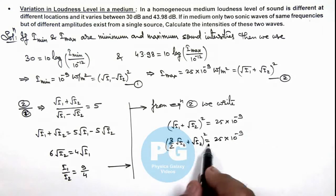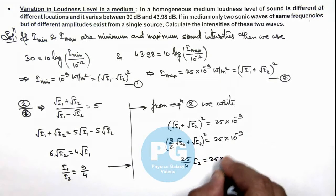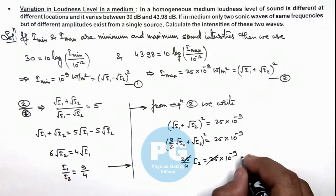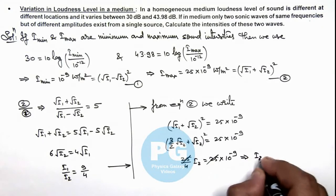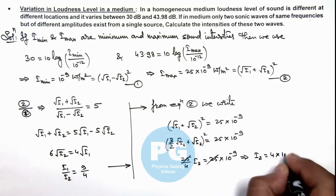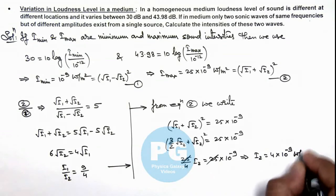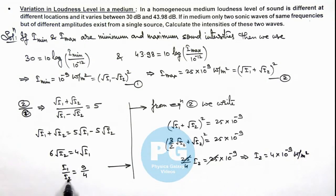And further on simplifying this will give us 25 by 4 times I_2 is 25 into 10 to power minus 9, here 25 gets cancelled out and we are getting the value of I_2 as 4 into 10 to power minus 9 watt per meter square, which if we substitute over here this will give us the value of I_1 which is 9 into 10 to power minus 9 watt per meter square. And these are the results of this problem.